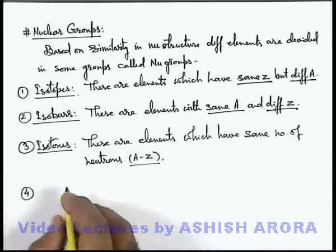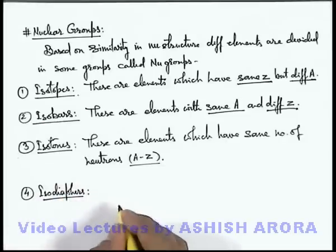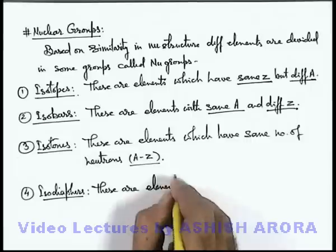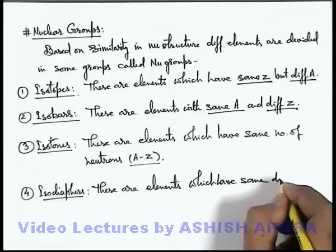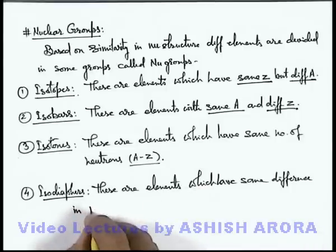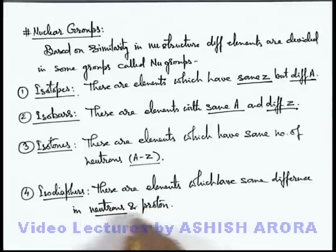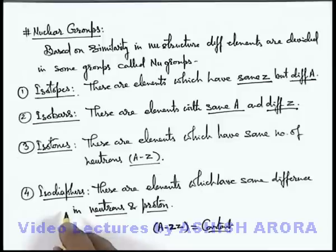The last important nuclear group is isodiaphers. These are elements which have the same difference in neutrons and protons. The difference in neutrons and protons is A minus 2Z. So the elements for which A minus 2Z is a constant are called isodiaphers. Those physical properties of elements which depend on this number will remain the same in all isodiaphers.